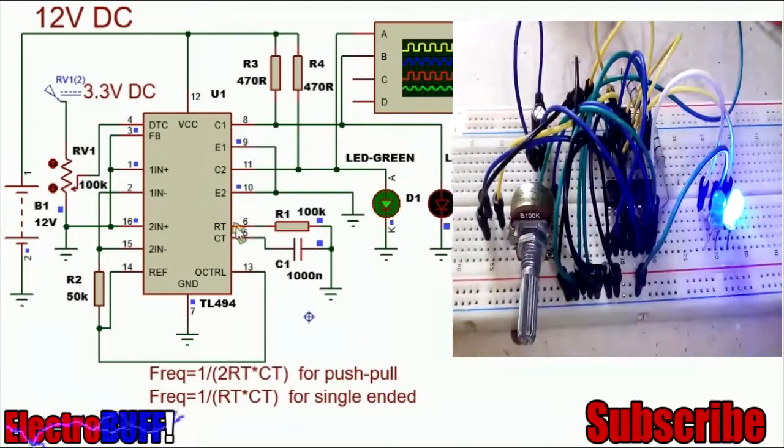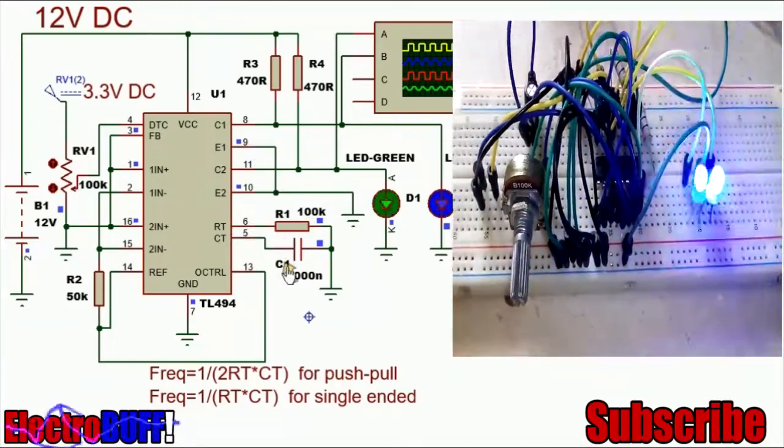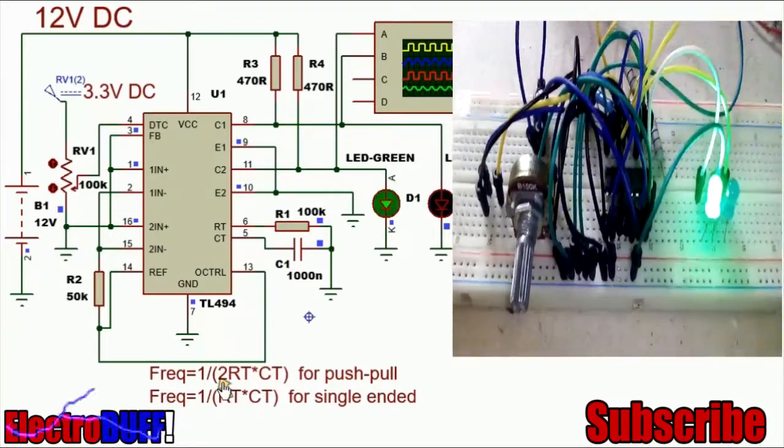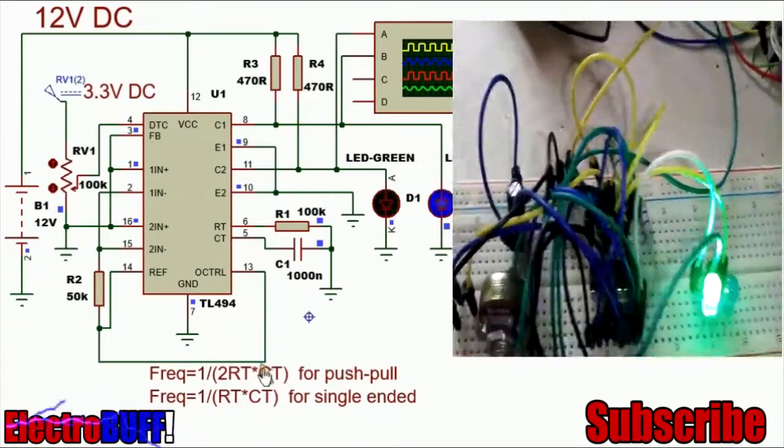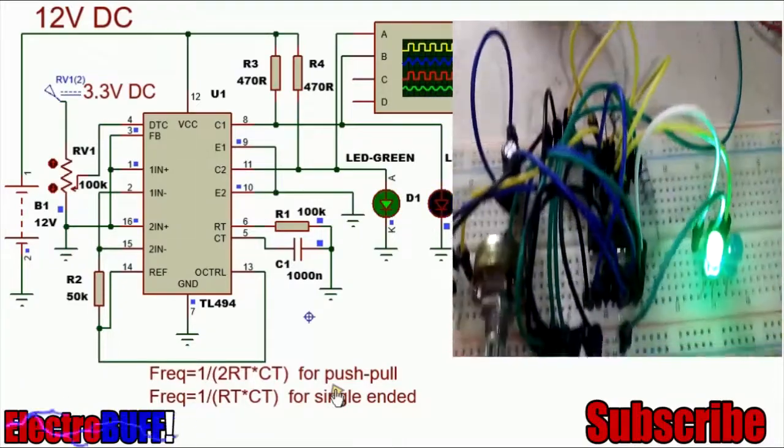The frequency is set by the resistor R1 and the capacitor C1. The formula is given as shown. For push-pull, the frequency will be half of that for single-ended or parallel operations.